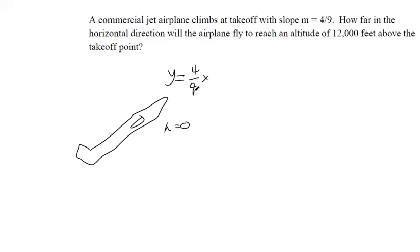So, this is an equation that models the height of this plane. It's traveling at four-ninths for a slope. It goes up four feet for every nine feet it goes horizontally. And then how long until it reaches a height of twelve-thousand? This is the part of my equation that represents the height.